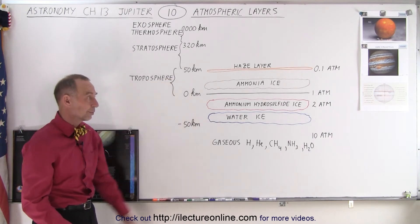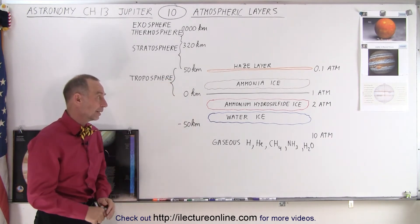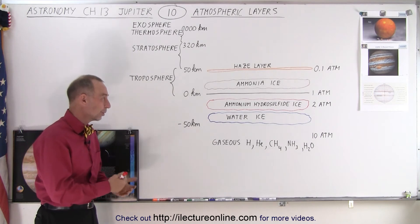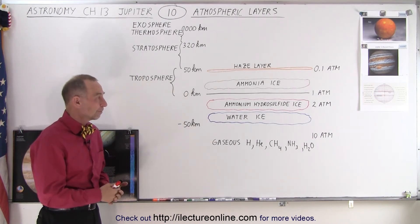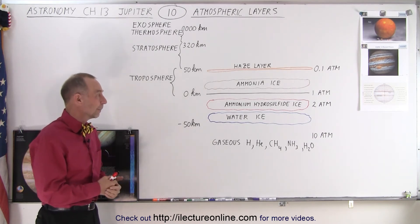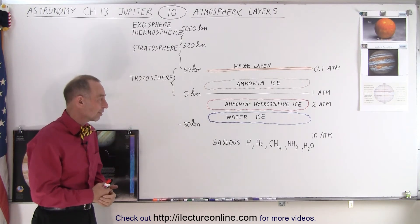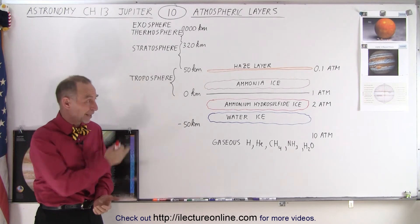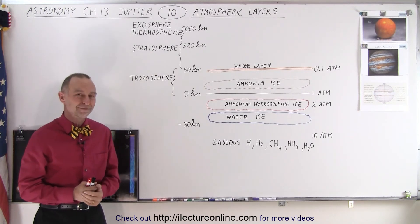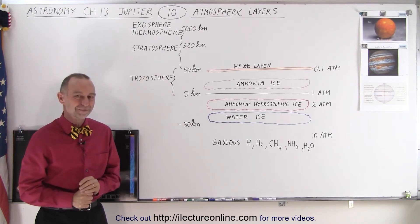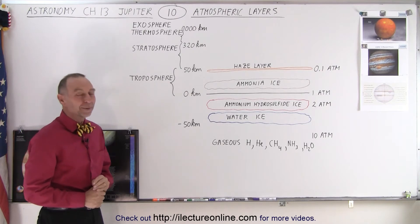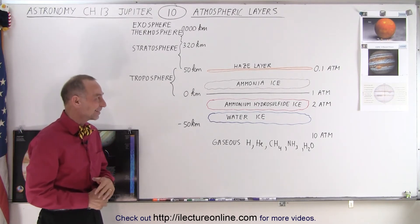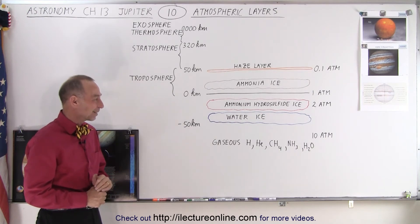The temperatures in these cloud layers are quite cold — probably somewhere between 100 to 160 degrees Celsius below zero. We do observe the formation of these distinct layers, making Jupiter's atmosphere quite remarkable. Notably, there is no solid ground anywhere near these regions of the planet.